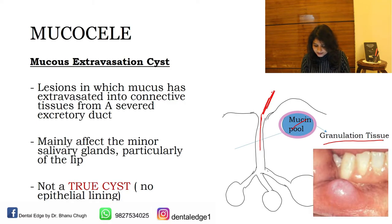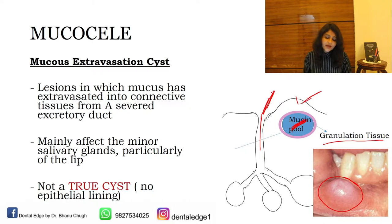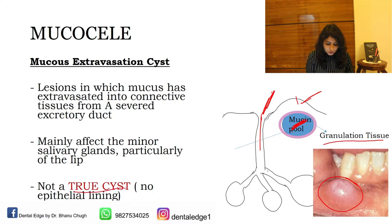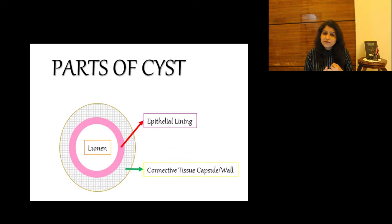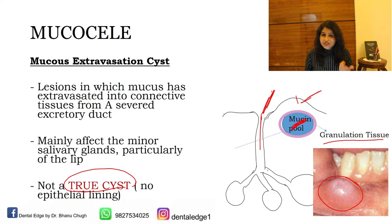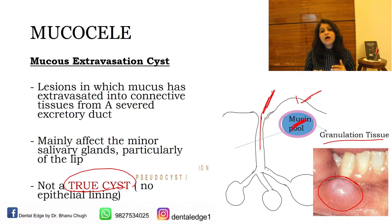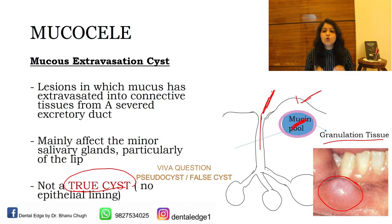As you can appreciate in this image, this is a mucocele on the lower lip. Due to the pooling of mucin, the epithelium is stretched and slightly elevated, leading to formation of a swelling. Now a very important thing is that a mucus extravasation cyst is not a true cyst. A cyst is a pathological cavity consisting of fluid, semi-fluid or gaseous substances lined by epithelium. In the case of a mucus extravasation cyst there is no epithelial lining — only a mucin pool surrounded by granulation tissue. Therefore it is a pseudo cyst, not a true cyst. This can be a viva question.